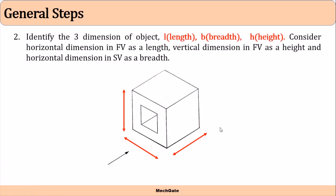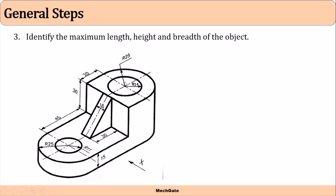The next step is to identify the three dimensions of the object: length, breadth, and height. Consider the horizontal dimension in the front view as length, the vertical dimension in the front view as height, and the horizontal dimension in the side view as breadth. So for this object, the horizontal dimension in the front view is 45 plus 20, that is 65, plus 25, that is 90, plus 25 — so maximum length is 115.